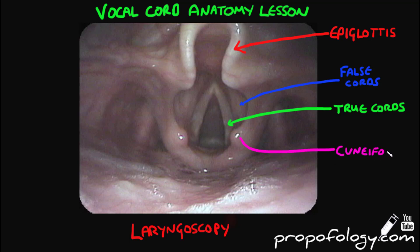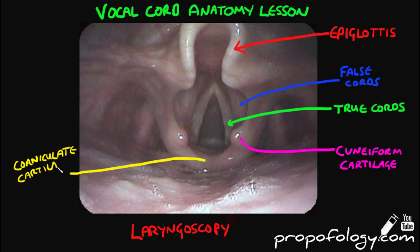The next two lines I'm drawing here are the cuneiform and corniculate cartilages. These help to provide the larynx with rigid support.